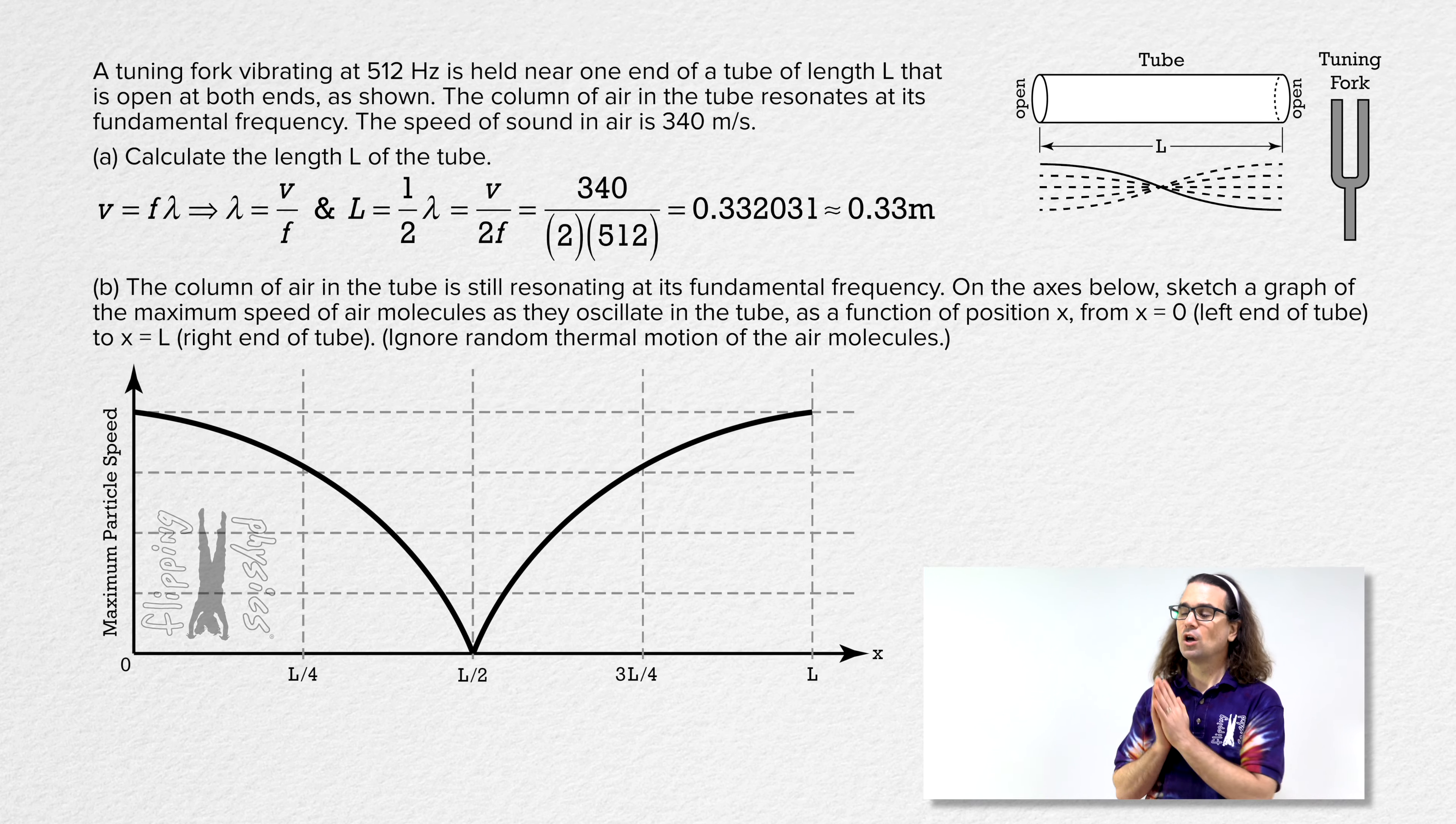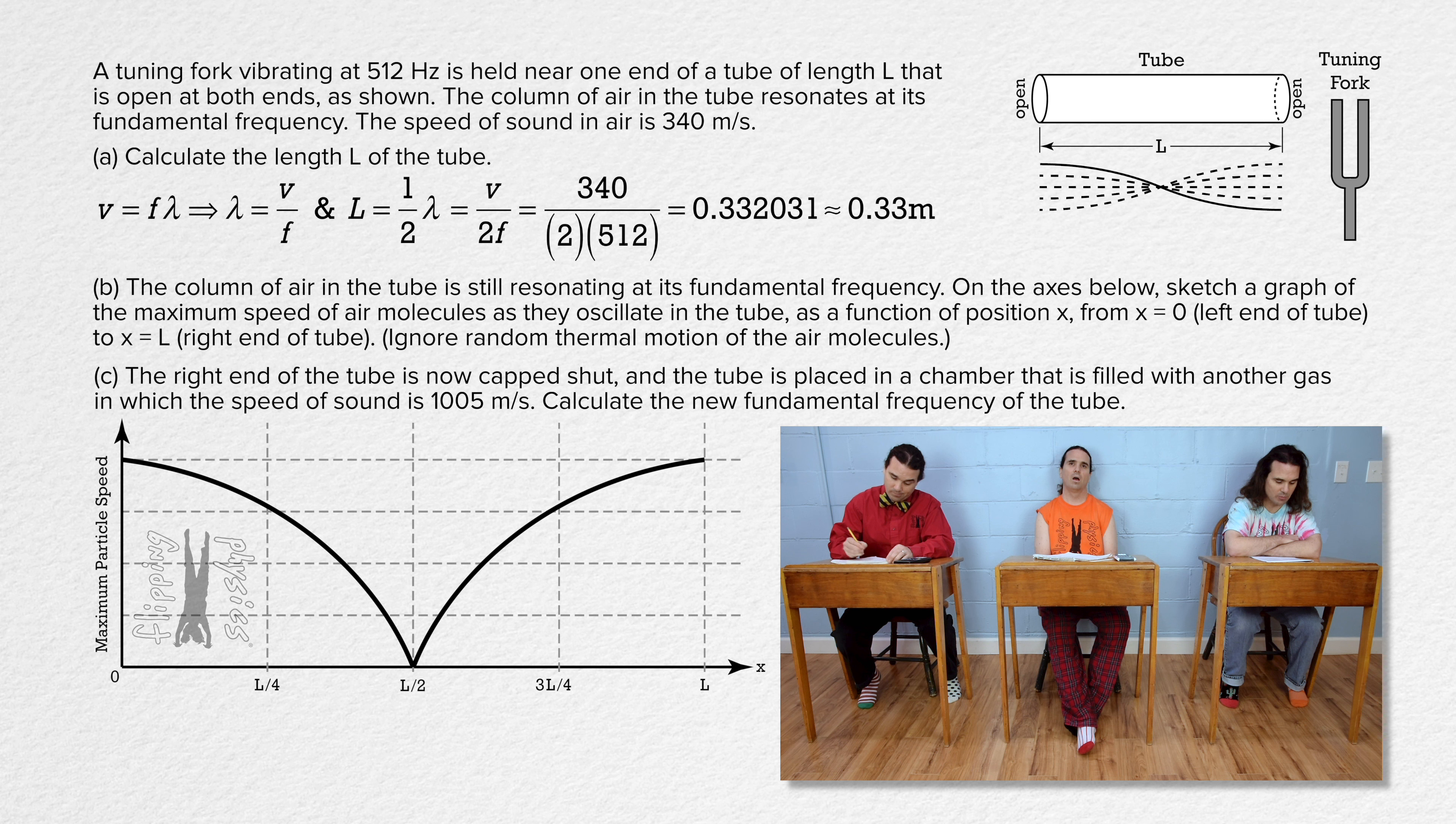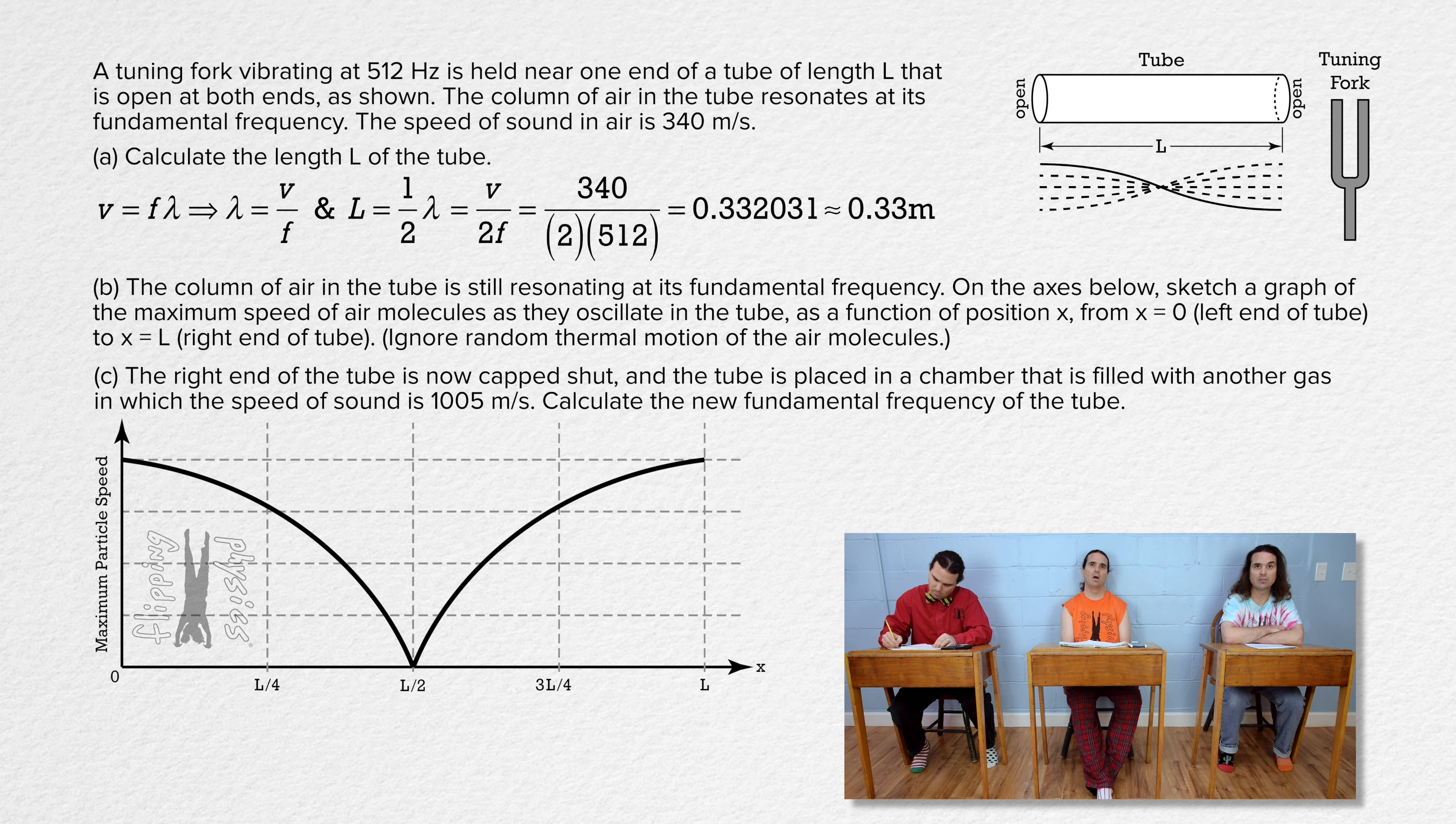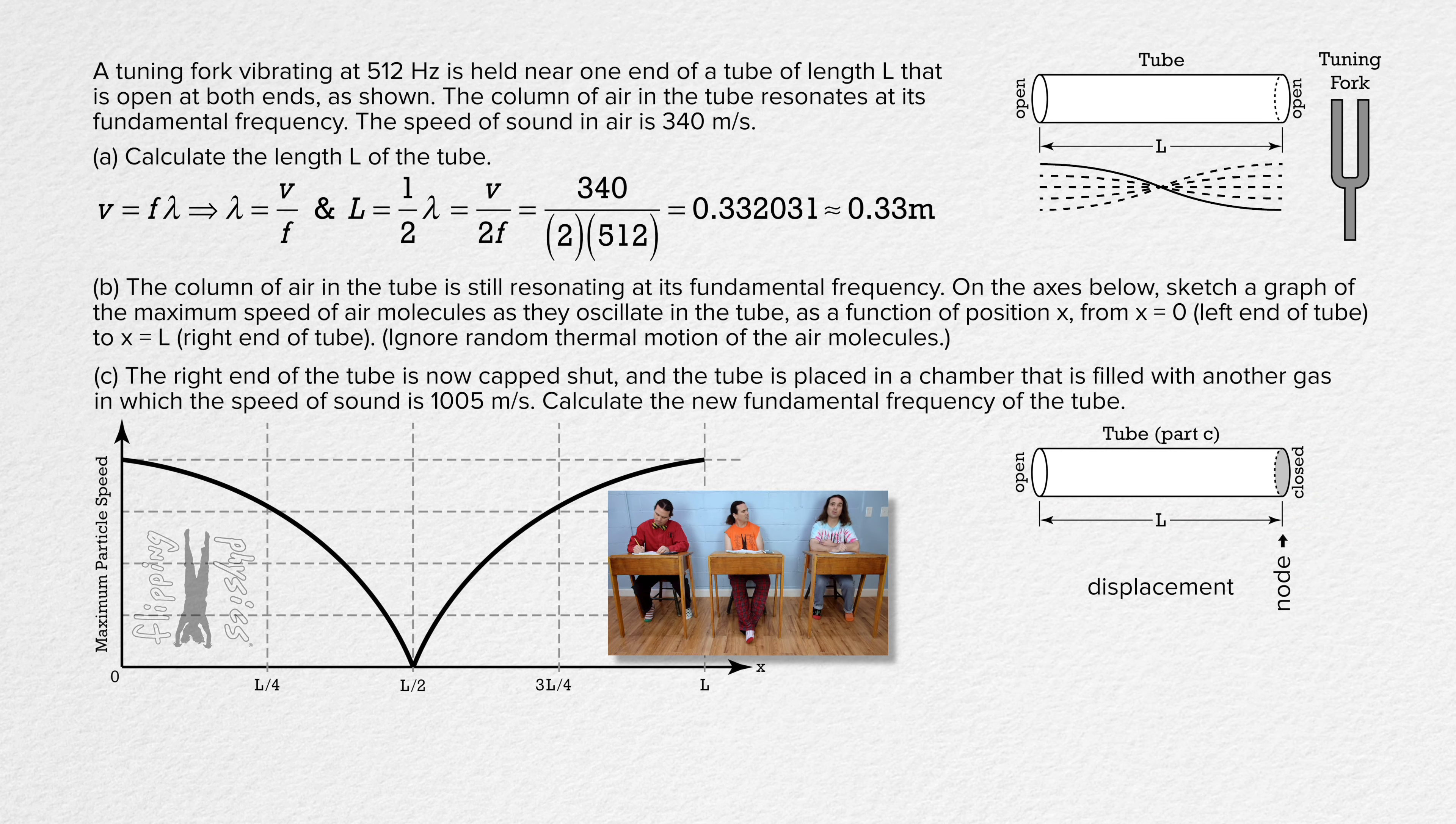Okay. Bo, please read and answer part c. Part c. The right end of the tube is now capped shut and the tube is placed in a chamber that is filled with another gas in which the speed of sound is 1005 meters per second. Calculate the new fundamental frequency of the tube. Okay. Well, now that the tube is closed on one end, the closed end is a displacement node and the open end is still a displacement antinode.